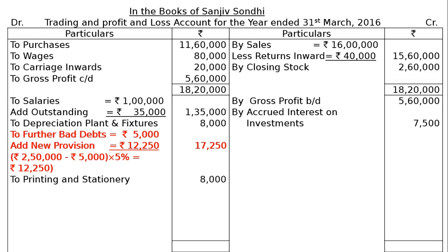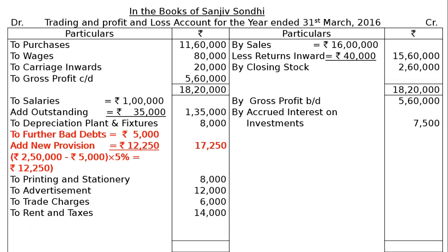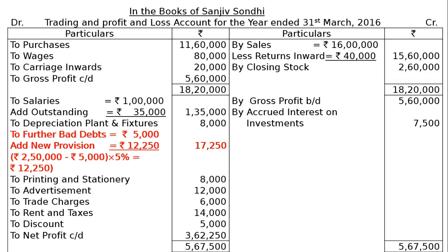Next: printing and stationery Rs. 8,000; advertisement Rs. 12,000; trade charges — a Profit and Loss Account item; rent and taxes Rs. 14,000; discount Rs. 5,000 on the debit side. Totalling the Profit and Loss Account gives Rs. 5,67,500. Deducting all expenses, the net profit carried down is Rs. 3,62,250.